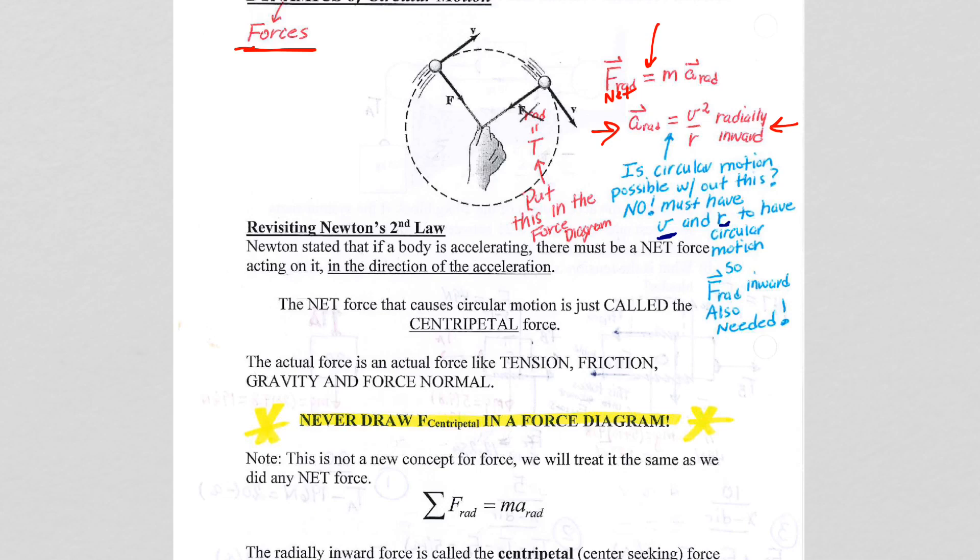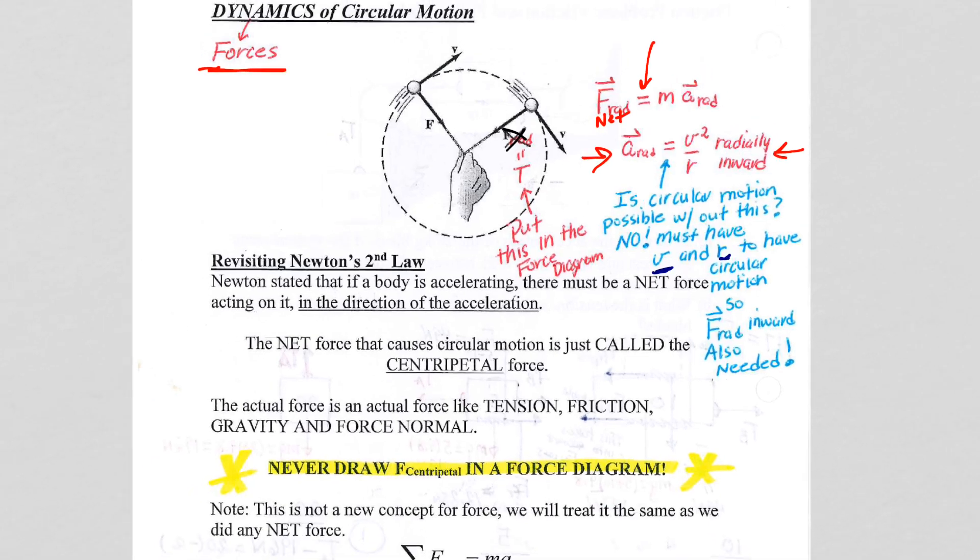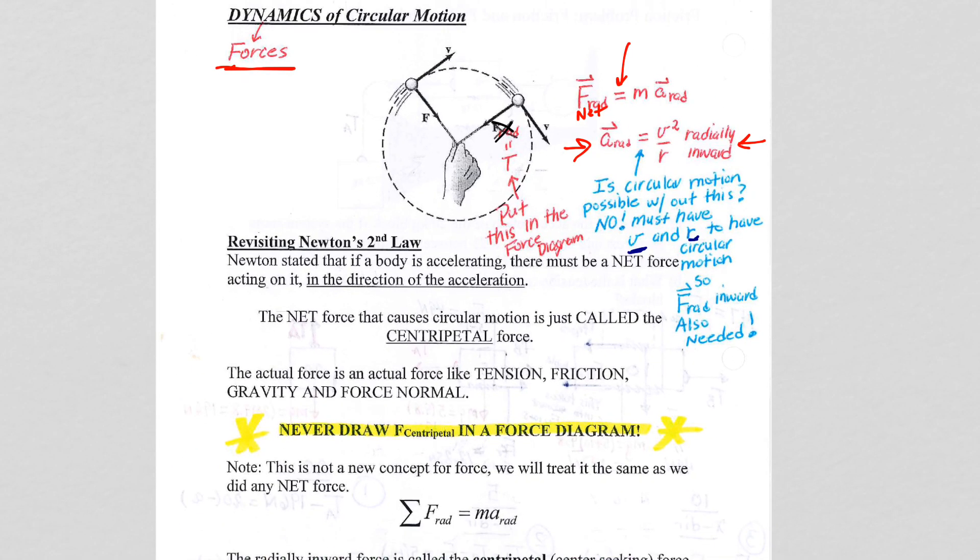In terms of looking at specific examples, please get used to drawing in actual forces, not labeling the inward force F radial. But you do not want to just generically label a force. It has to be an actual force: tension, friction, the force normal, gravity, or some other applied force.